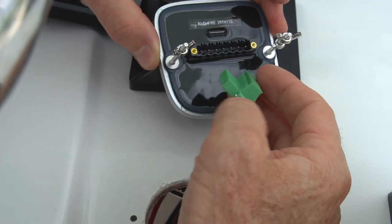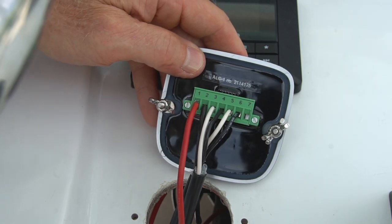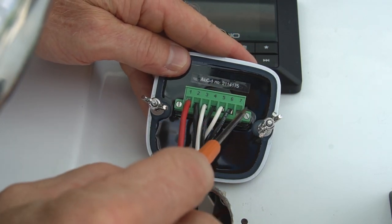Just insert the terminal strip into the socket on the back of the ALC control and then tighten the two screws on either side of the terminal strip.